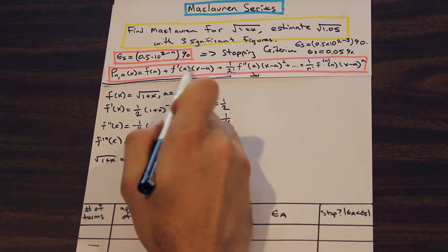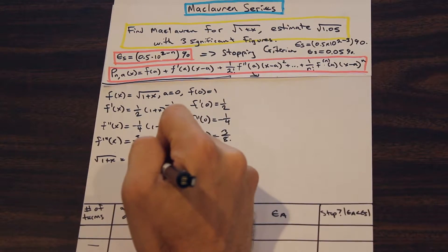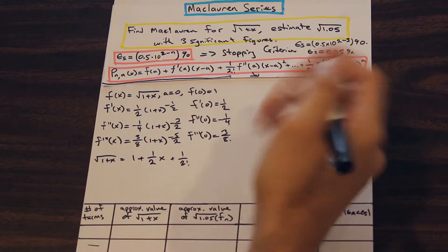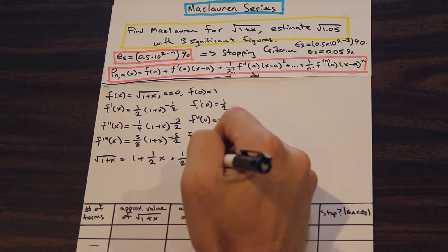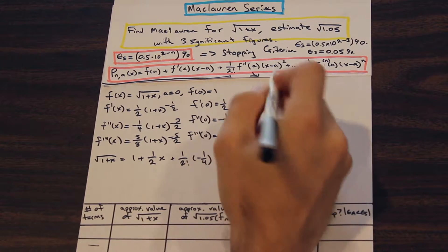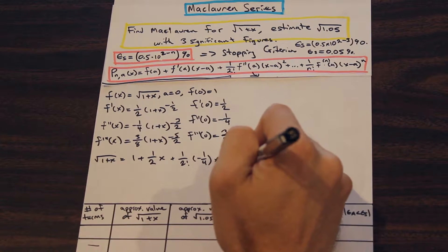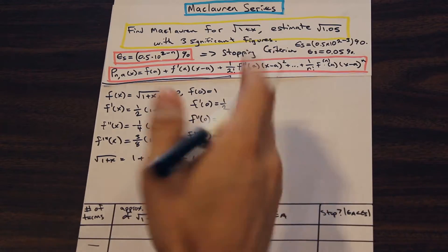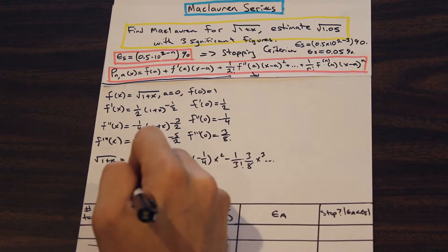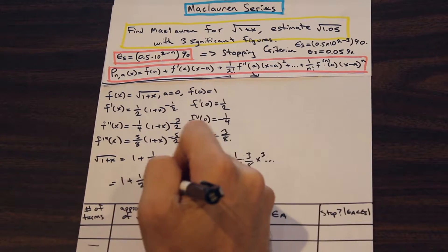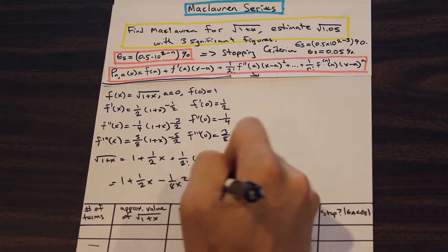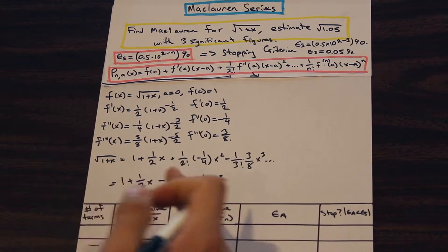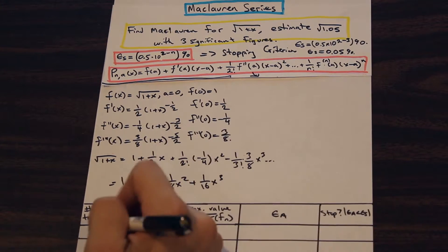The next term is going to be f′(a) times (x − a): f′(a) is 1/2, and then we just have x because a is equal to 0. Moving on to the next term, we have 1 over 2 factorial — this formula will be given to you on the formula sheet — f″(a) is −1/4, and we have x². And for the third term we have minus 1 over 3 factorial times 3/8 times x³. If we simplify that, we have 1 + (1/2)x − (1/8)x² + (1/16)x³. So that is our Taylor series expansion for √(1+x), and we have four terms here.